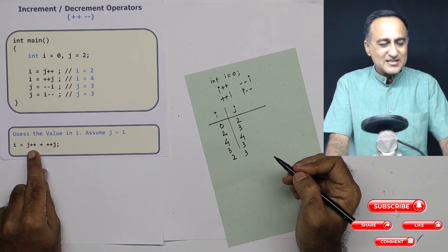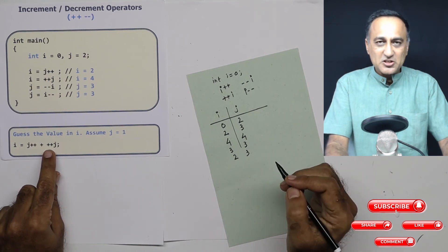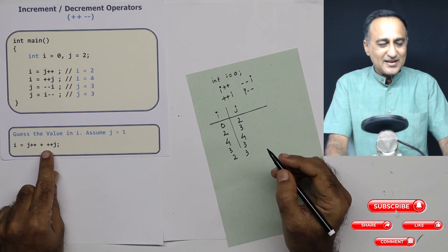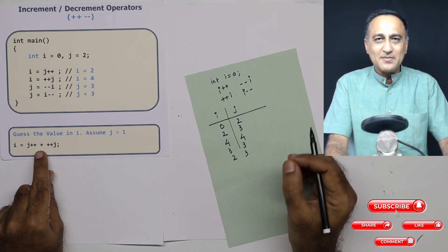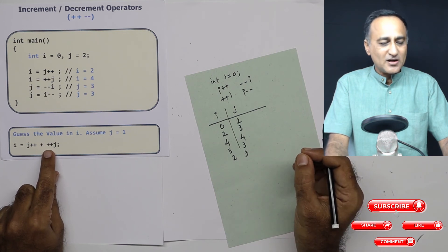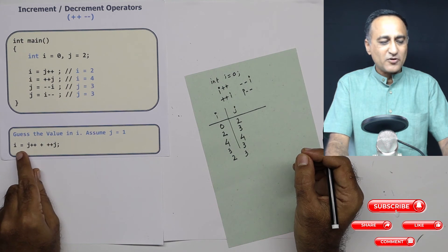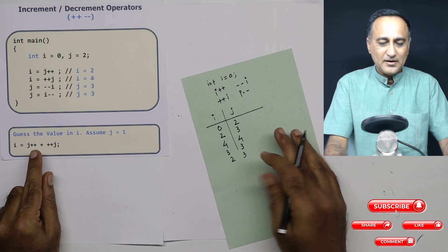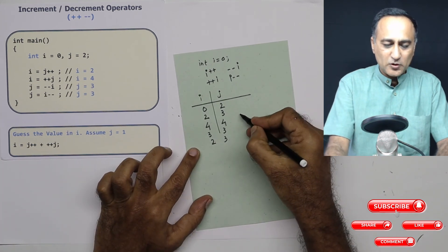If the value of the same memory location—in this case variable j—is changed more than once in a single expression, then the result is not defined by C. The result is compiler-dependent. Different compilers will produce different answers for this. So i may take one value in one compiler and another value in another compiler. Let me give you another example to understand this.